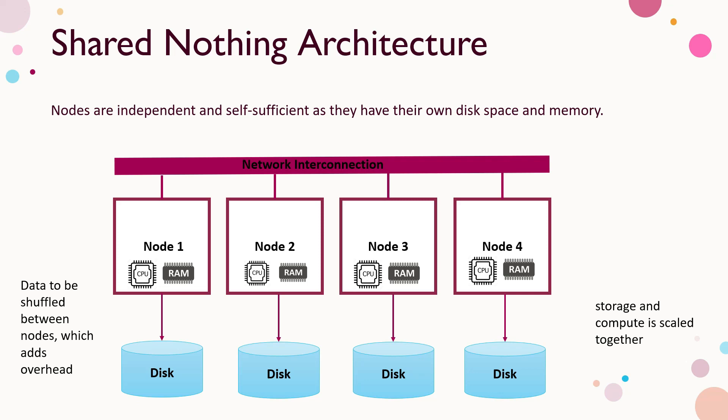Also, in shared nothing, storage and compute scale together. When we look at Snowflake, it is a hybrid — a combination of the best features of both of these architectures.